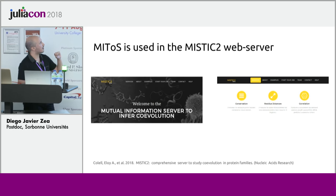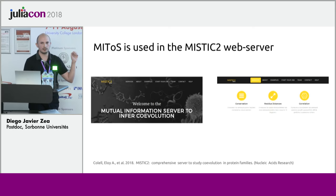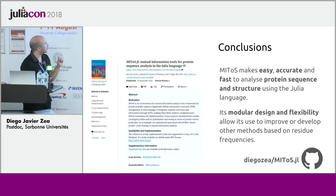Mitos is used inside the Mystic Tube Web Server, which is our web server for calculating mainly co-variation methods. It's used there for calculating conservation and also the corrected mutual information. The work was published last year in the Bioinformatics Journal.